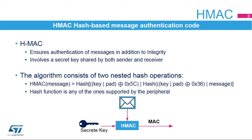The HMAC function consists of two nested hash functions with a secret key that is shared by the sender and the receiver. The hash function involved in the HMAC computation can be any one supported by the peripheral: MD5, SHA-1, or SHA-2.